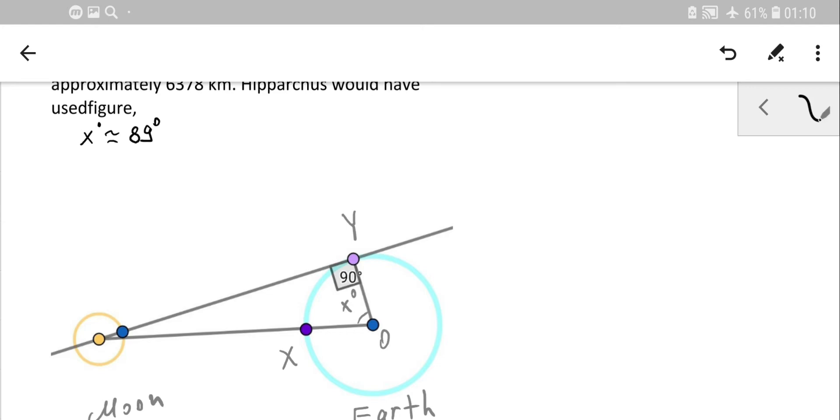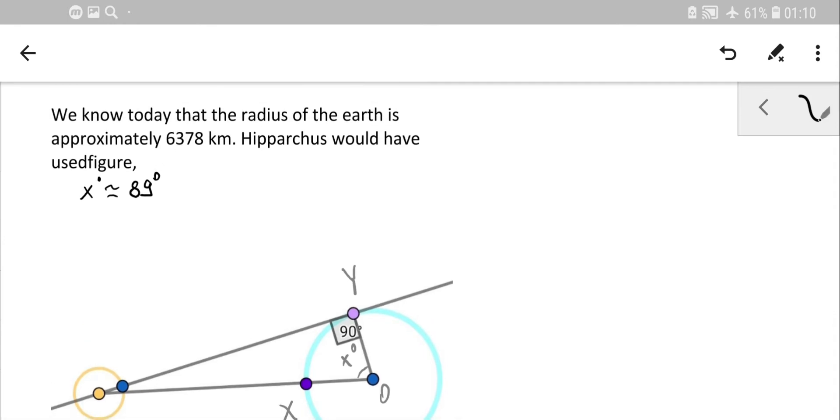If the total travel distance is about 40,000 kilometers around, we can calculate the radius. Remember, circumference C = 2πr, so 40,000 ≈ 2 × 3.14 × r. From this, we get the radius as approximately 6378 kilometers.